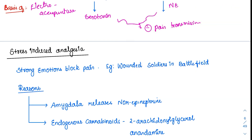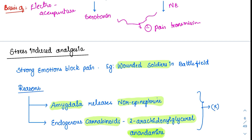In stressed or wounded soldiers, the stress-induced analgesia system activates. Strong emotions are controlled by the amygdala, which releases norepinephrine that directly reduces pain. There is also production of endogenous cannabinoids — 2-arachidonylglycerol and anandamide. Both norepinephrine and endogenous cannabinoids are released under severe stress and act to inhibit pain transmission.